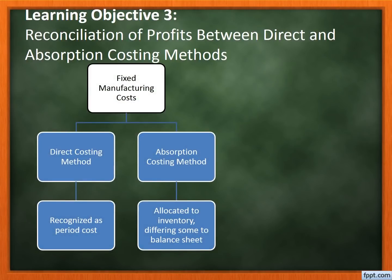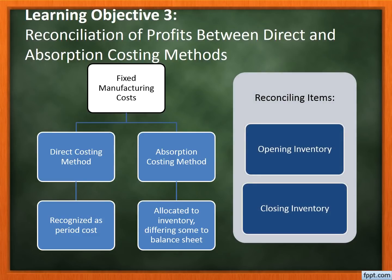Learning Objective 3: Reconciliation of Profits Between Direct and Absorption Costing Methods. The main difference between the two costing methods is in the way that inventory is valued. Direct costing recognizes all fixed manufacturing costs as a period cost, while in absorption costing, some of the fixed manufacturing costs lies in the closing inventory, causing a difference in net profit. The difference in net profits is attributable to fixed manufacturing costs deferred to the balance sheet as part of closing inventory. Therefore, the reconciling items are the difference in opening inventory values and the difference in closing inventory values between the two costing methods.